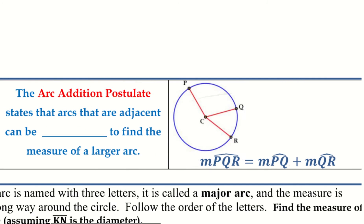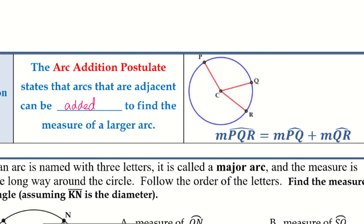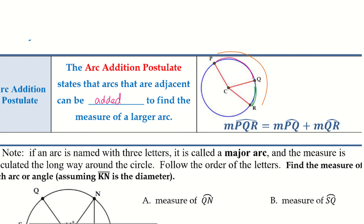The arc addition postulate states that arcs that are adjacent can be added to find the measure of the larger arc. So PQ plus QR gives me the entire arc PQR. We've worked with the addition postulate before with line segments and angles — it's the same concept. We can also work in reverse: if given the whole arc and one part, subtract to find the other.